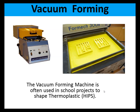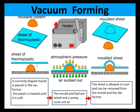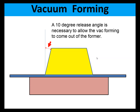Vacuum forming is often used in schools to shape thermoplastic — here it is being used to shape HIPS. The stages shown in the diagram are: a correctly shaped mold is placed in the vacuum former; the plastic is heated until it is soft; the pump sucks air through holes in the bed; atmospheric pressure pushes down on the thermoplastic material; and the sheet is allowed to cool and then removed from the vacuum former. Remember that a 10-degree release angle is necessary to allow the forming to come out of the former so they are not locked together.